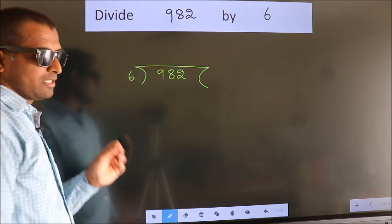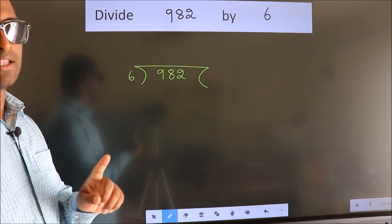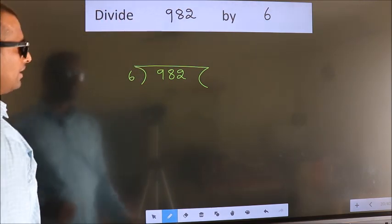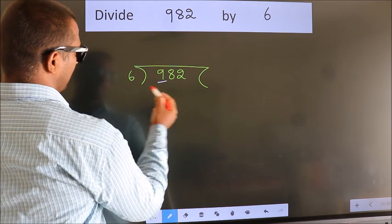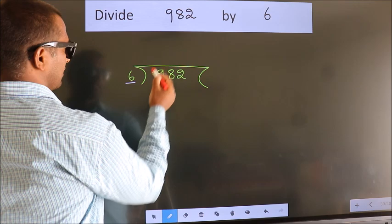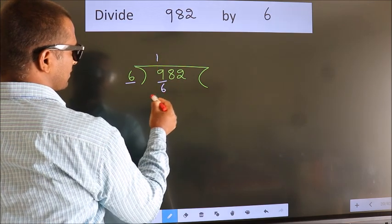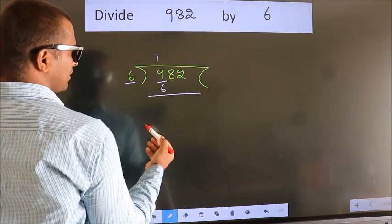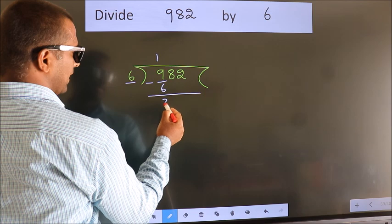This is your step 1. Next, here we have 9. Here 6. A number close to 9 in the 6 table is 6 once 6. Now we should subtract. We get 3.